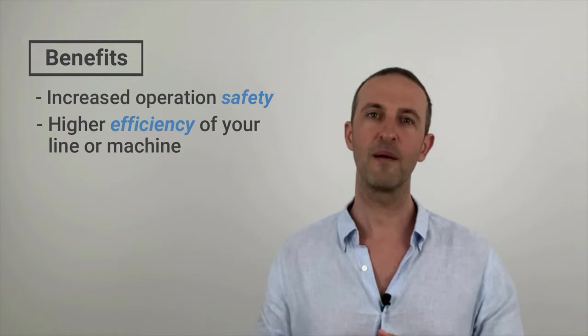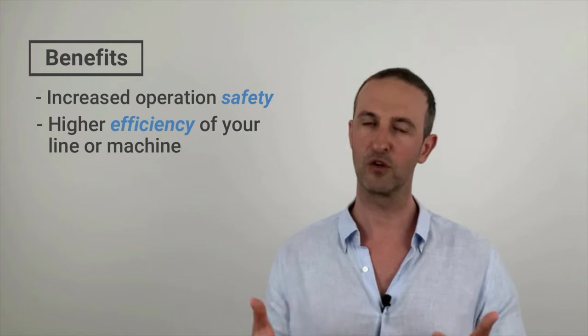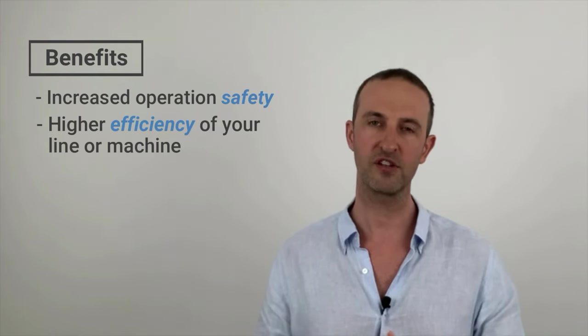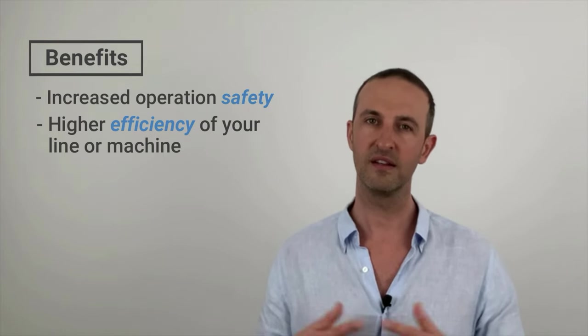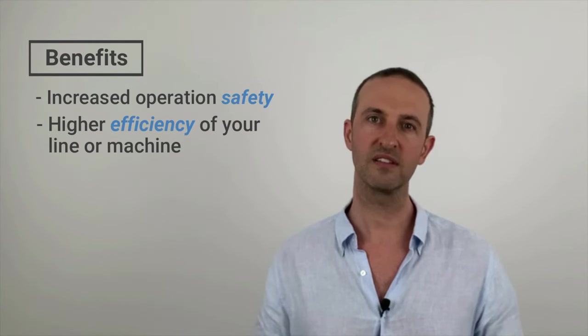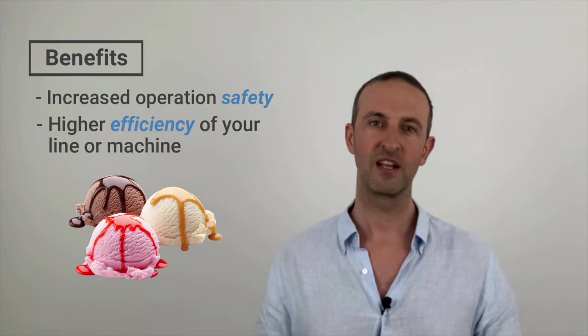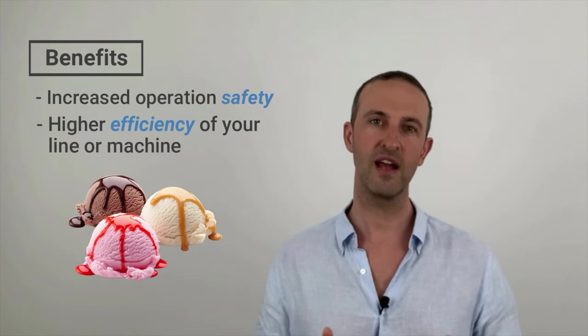For example, if a person without the correct authorization would change PID values of a cooling tunnel of an ice cream production line, this could lead to incorrect temperatures resulting in a lot of downtime and a lot of melted ice cream — not exactly the desired outcome for the ice cream manufacturer. In these next few lectures we are going to add a fully functional user administration to the application using the following steps.